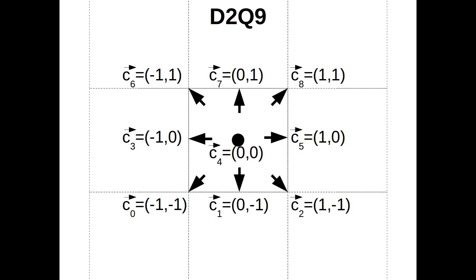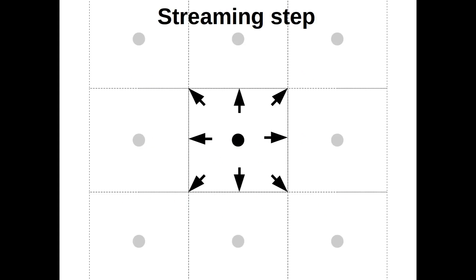The transport of particle distributions to neighboring cells is called streaming step in LBM. It basically models the convective transport in the fluid flow. All distributions are copied to the neighboring cells. This also fills the current cell with a new set of distributions.